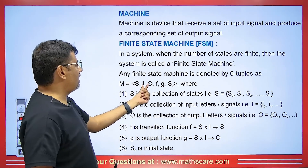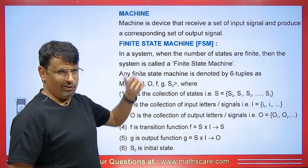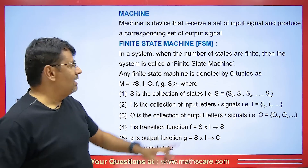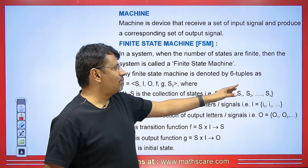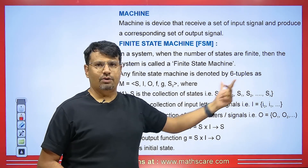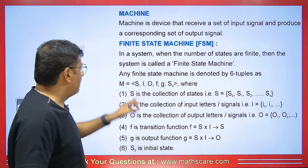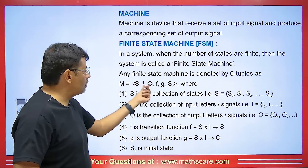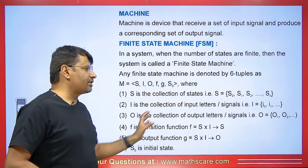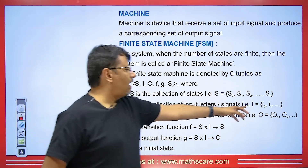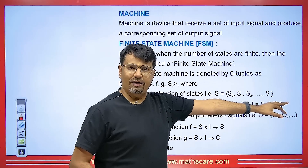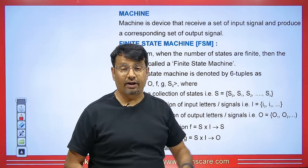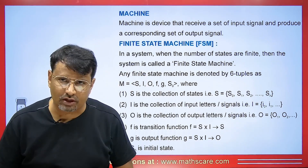Those tuples are S, I, O, F, G, and S0. Where S represents a state — for example, S0, S1, S2 and so on — like we have finite states. I represents the collection of all possible inputs and O represents the collection of all possible outputs. Inputs are denoted by I0, I1, while outputs are denoted by O1, O2. Sometimes we also use 0 and 1 instead.